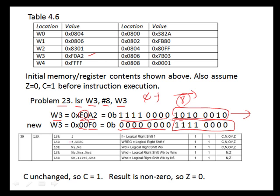In terms of flags, looking at the logical shift right instruction in the table, the form that shifts a working register by multiple bit positions only affects the negative and zero flags. That means carry is unaffected and remains C equal to 1. The final result is non-zero, so the zero flag is false, or 0.